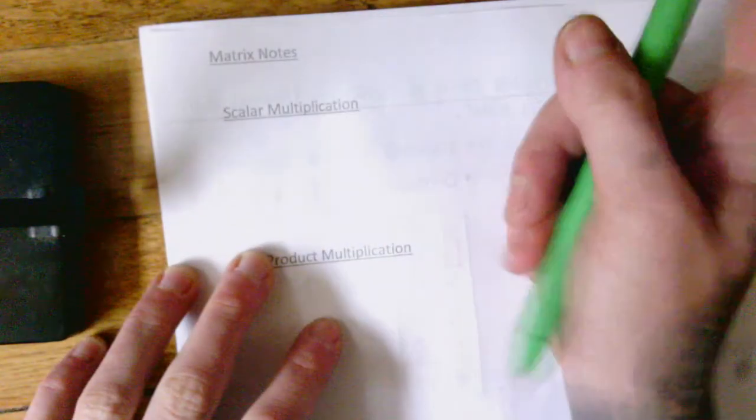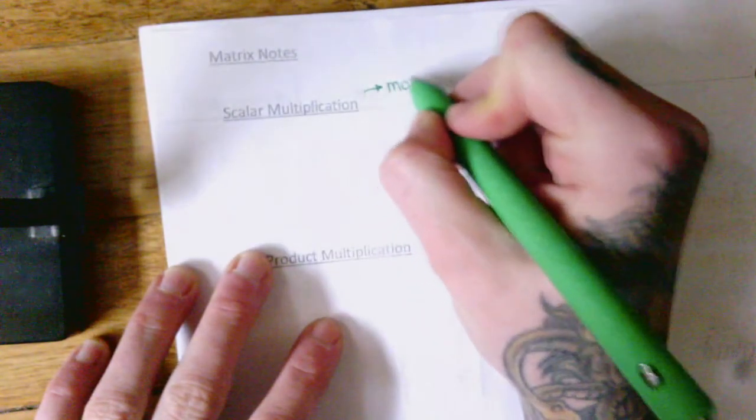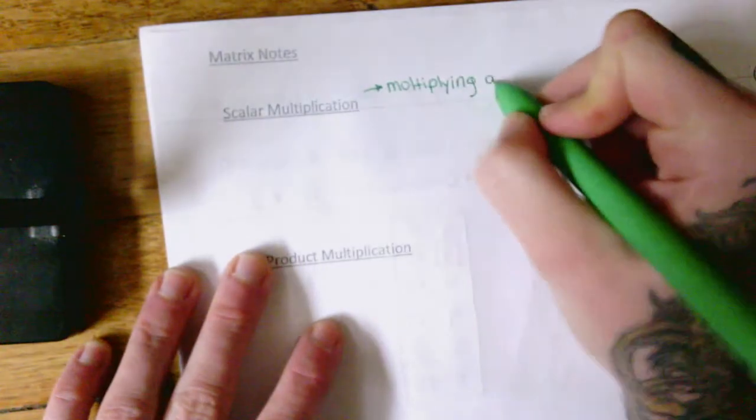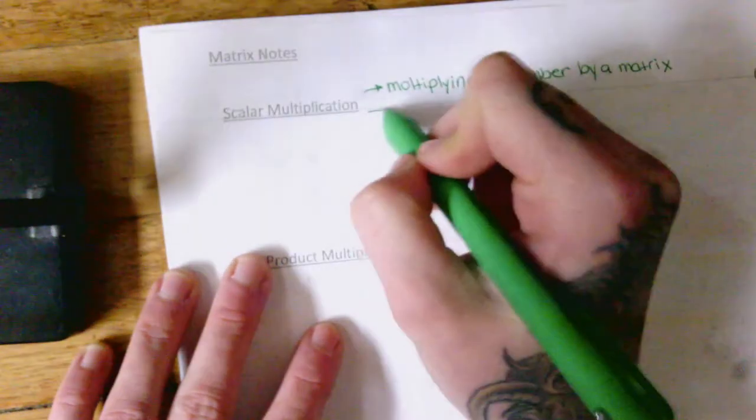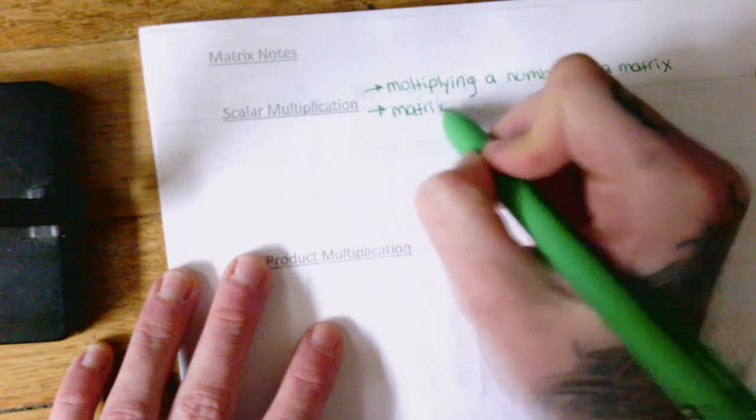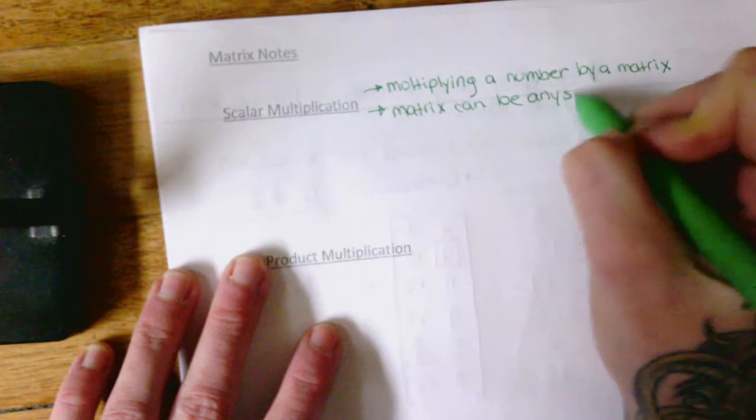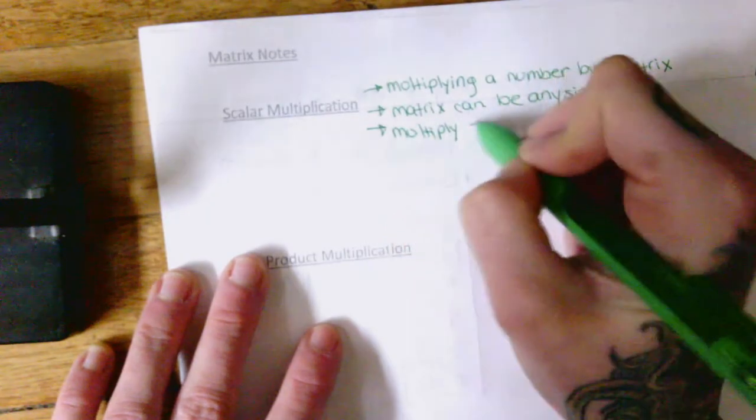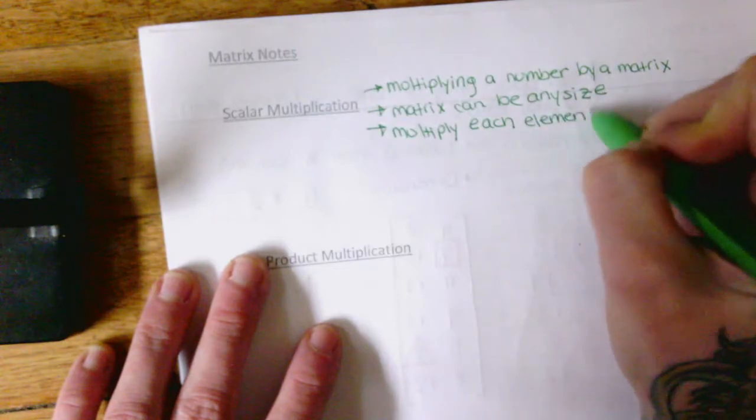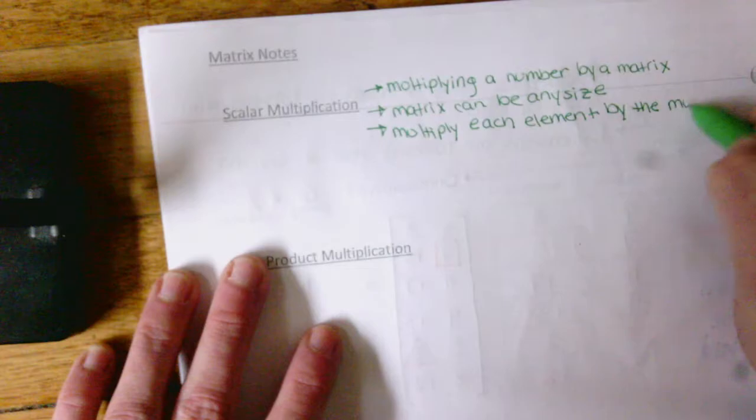Let's move along to what we already know, scalar multiplication. So we're only going to talk about scalar multiplication today. We'll do dot product multiplication tomorrow. So scalar multiplication is when we're multiplying a number by a matrix. So the matrix can be any size, and all I'm doing is multiplying each element by the number, by the multiplier we'll say.